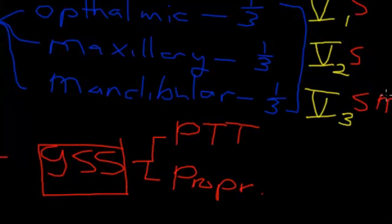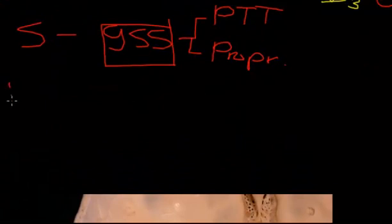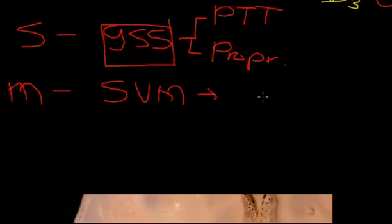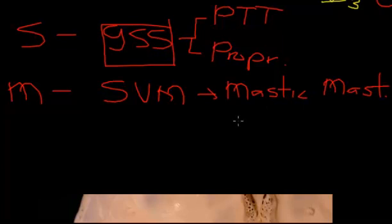The add-on motor component is quite special. That motor component is motor to pharyngeal arch-derived muscle, so we know that is special visceral motor. That means it is to the muscles of mastication, which are by definition from pharyngeal arch number one.